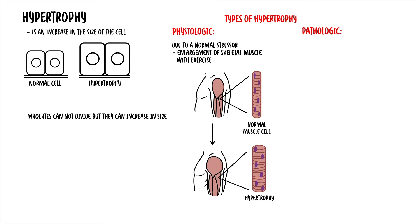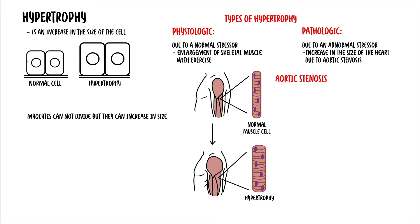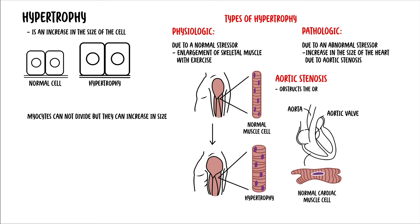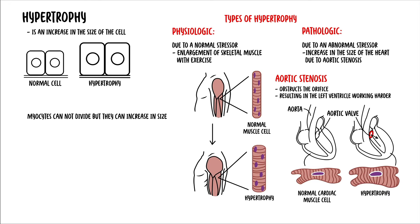Pathologic hypertrophy occurs due to an abnormal stressor. For example, increase in the size of the heart due to aortic stenosis. Aortic stenosis is due to a change in the aortic valve which obstructs the orifice, resulting in the left ventricle working harder to pump blood into the aorta, and so it undergoes hypertrophy.